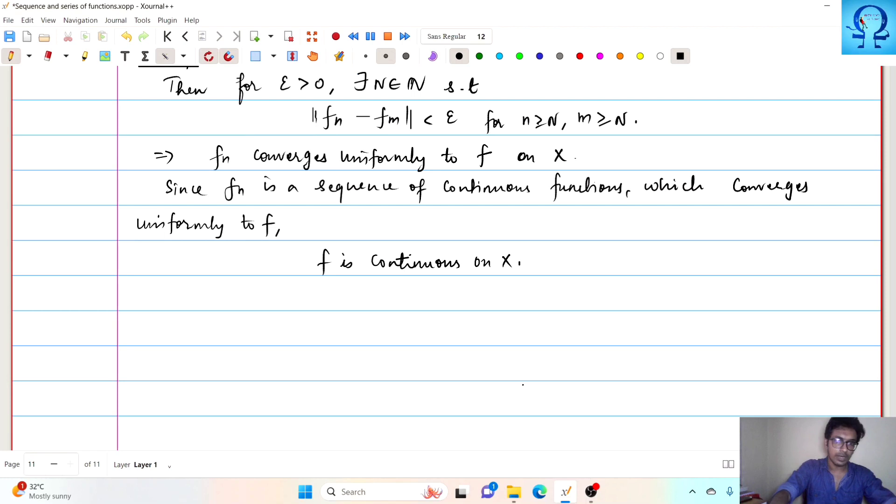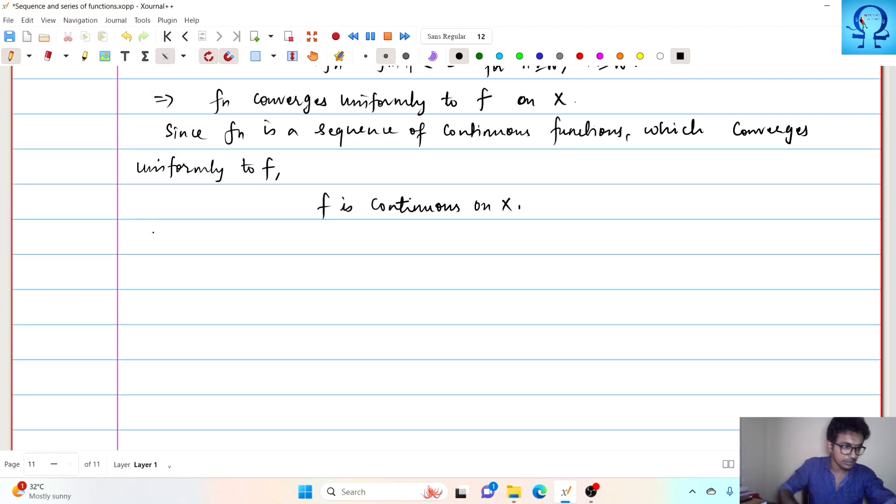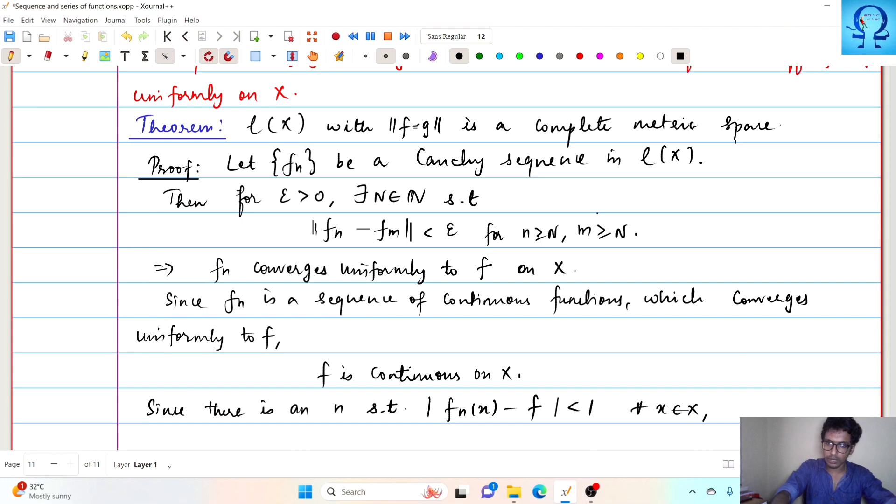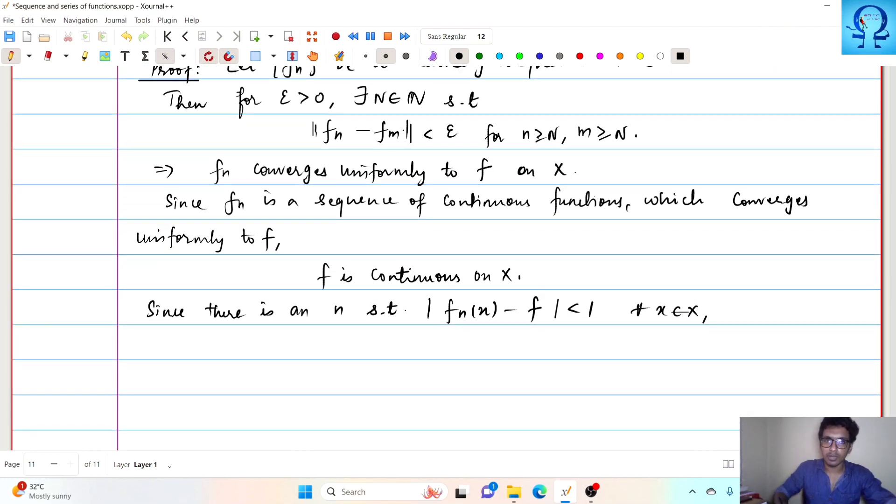Now we just have to prove it is bounded. Since there is an N such that absolute value of f_n of x minus f of x would be less than 1 for all x in X. The thing is that in particular, I have chosen epsilon to be 1.